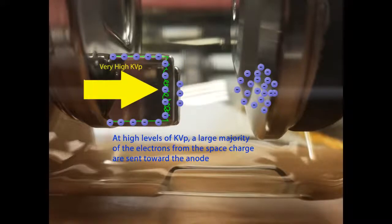At high levels of KVP, a large majority of the electrons from the space charge are sent towards the anode.